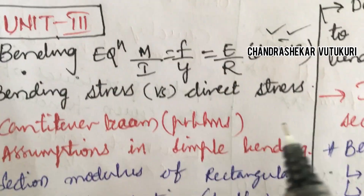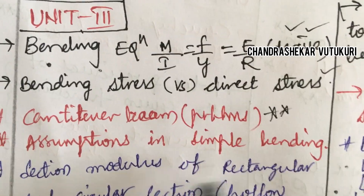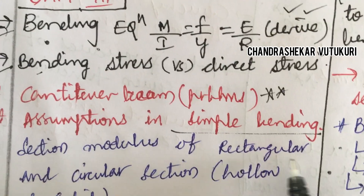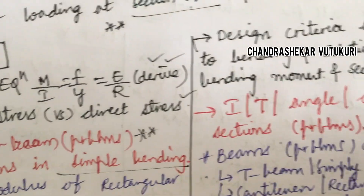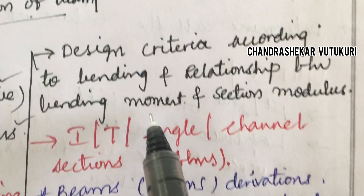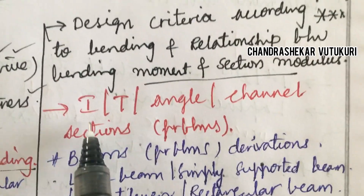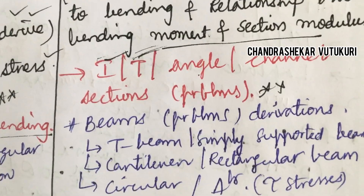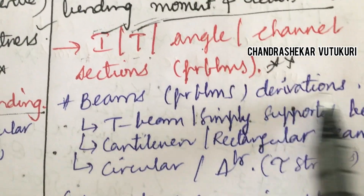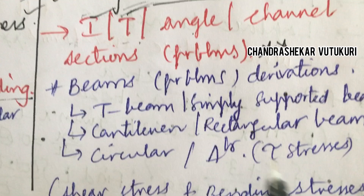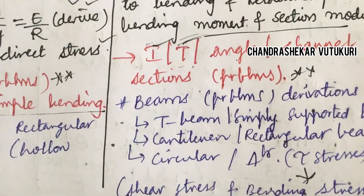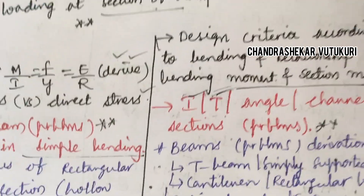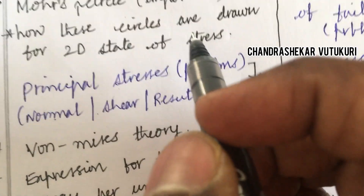The third unit is all about the bending equation — derive it and cover bending stress versus direct stress, cantilever beam problems, and the assumptions in bending stress. One derivation and the assumptions are both required for the exam. Section modulus of rectangular and circular sections, for hollow and solid sections, is a very important question. Design criteria according to bending, the bending moment equation, I-section and T-section and channel section problems — at least one I or T section problem will appear. Beam problems and derivations related to T-beam, simply supported, cantilever, rectangular, circular, and triangular sections, along with shear stress and bending moment problems, are very important. Do not forget to write the units; there is no unit for strain, but other stresses carry units.